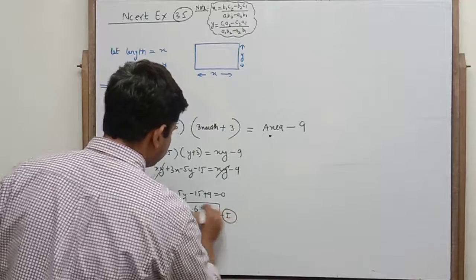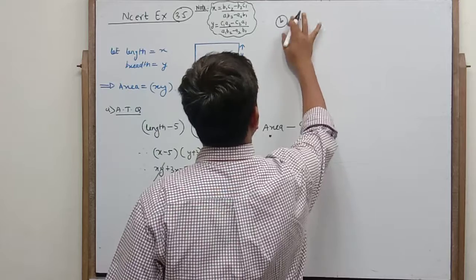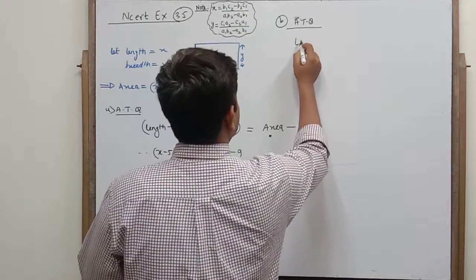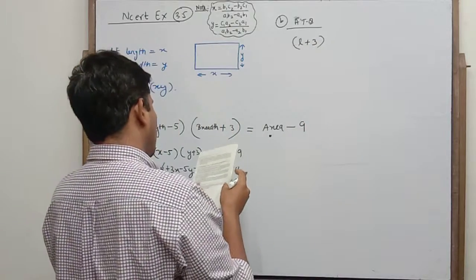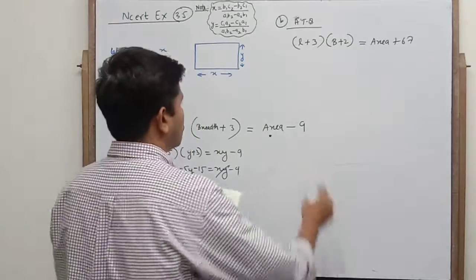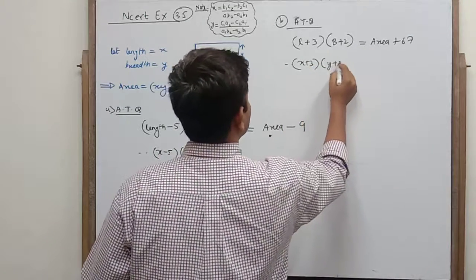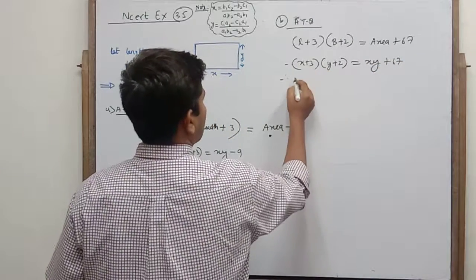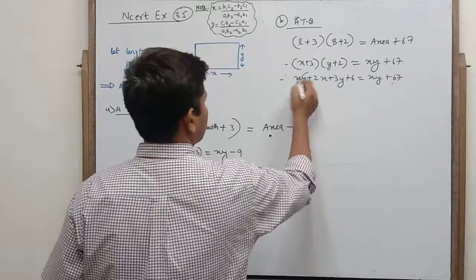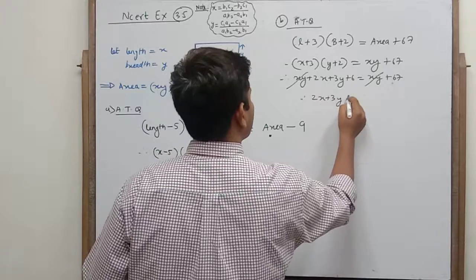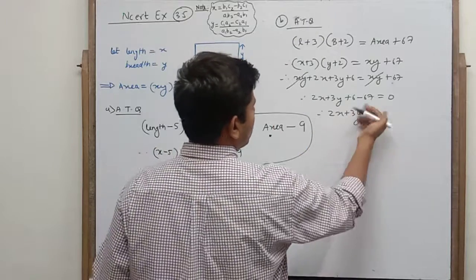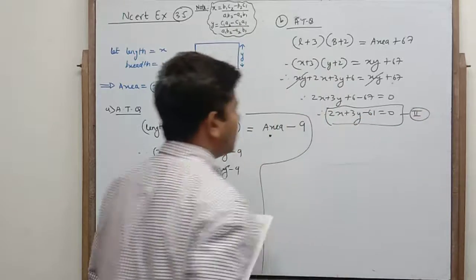This gives us Equation 1. According to the question, if the length increases by 3 units, then length plus 3, and breadth by 2 units, so breadth plus 2 equals area plus 67. So (x plus 3)(y plus 2) equals xy plus 67. Expanding: xy plus 2x plus 3y plus 6 equals xy plus 67. Cancelling xy: 2x plus 3y plus 6 minus 67 equals 0, giving 2x plus 3y minus 61 equals 0.